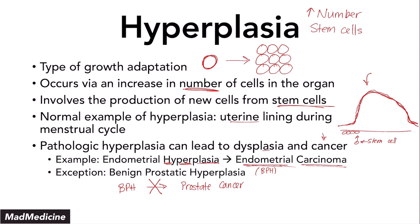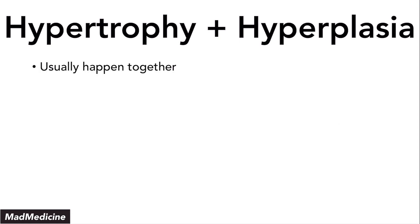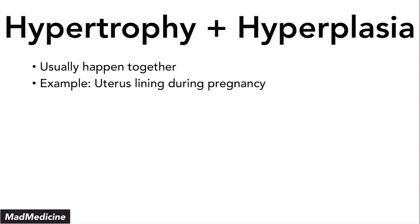Now that we've gone through hyperplasia and hypertrophy, there's one last concept to understand: hypertrophy and hyperplasia usually happen together in our body. Very rarely do our bodies go through just one pathway when put under a lot of stress. A quintessential example of this combined mechanism occurs during pregnancy. During pregnancy, the uterine lining actually increases as the uterus grows to accommodate the fetus.